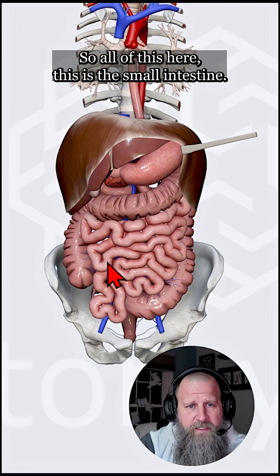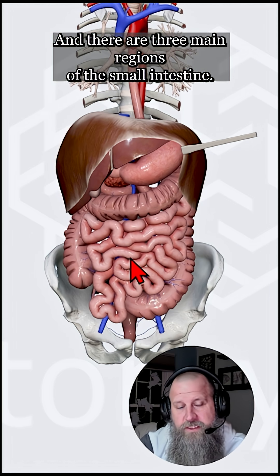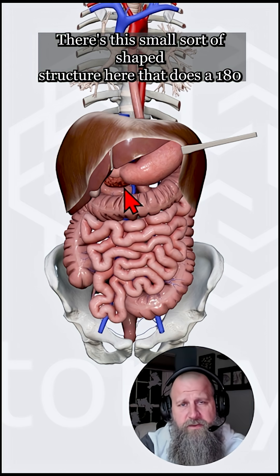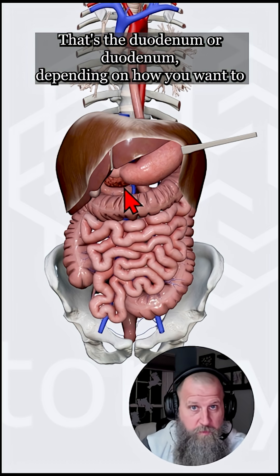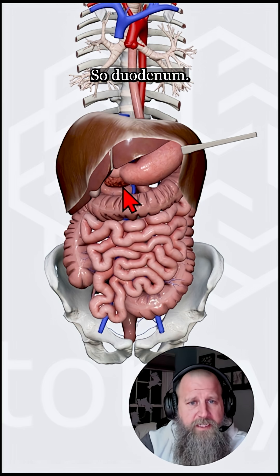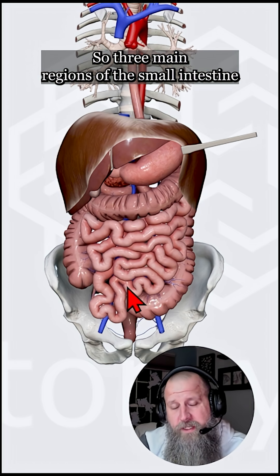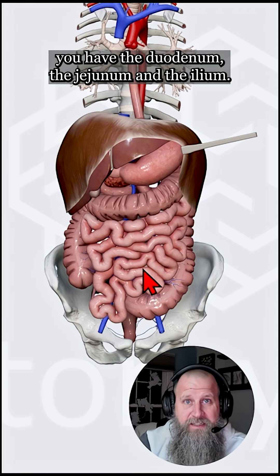All of this here is the small intestine, and there are three main regions of the small intestine. There's this small sort of S-shaped structure here that does a 180 degree turn — that's the duodenum. Then you have the jejunum, and then you have the ileum. So three main regions of the small intestine: the duodenum, the jejunum, and the ileum.